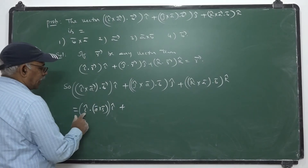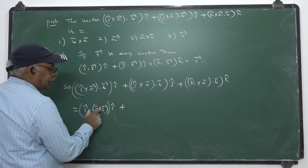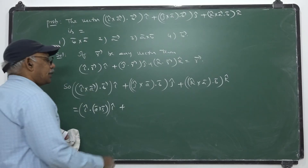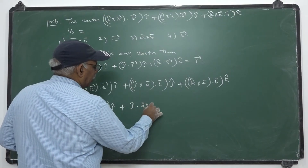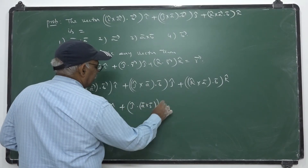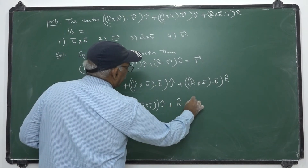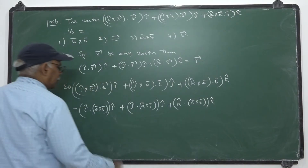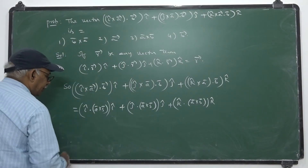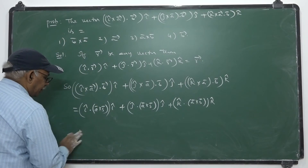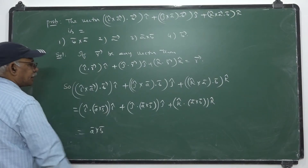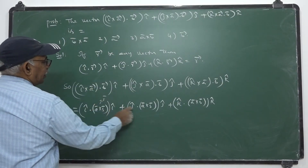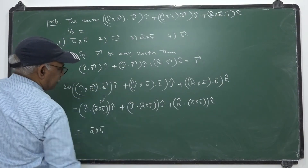So ī·(ā × b̄)·ī + j̄·(ā × b̄)·j̄ + k̄·(ā × b̄)·k̄. This is clearly in the form of ī·r̄·ī + j̄·r̄·j̄ + k̄·r̄·k̄ = r̄, where r̄ is ā × b̄. Therefore this equals ā × b̄.